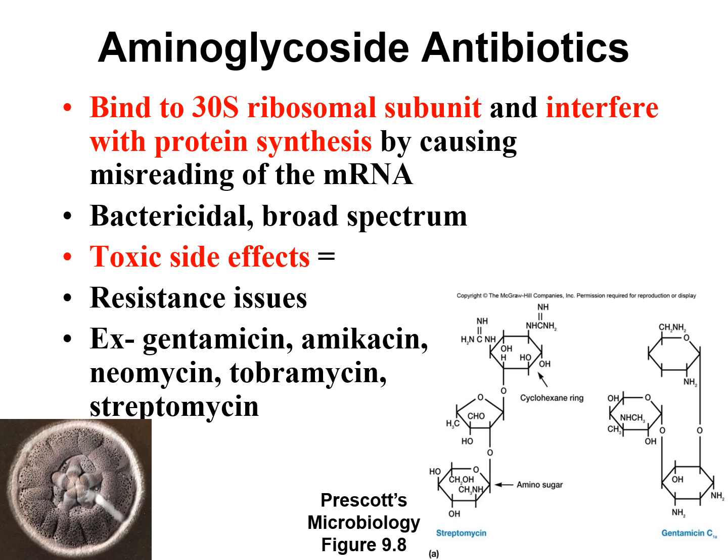The only thing you need to know on these antibiotics is what's in red. I know I wrote where specifically they bind on the ribosome, but you just need to know that they bind to 70S ribosomes and interfere with protein synthesis. I'm not going to ask you that aminoglycoside antibiotics bind to the 30S ribosomal subunit — you don't need to know that. Just know that they bind to 70S ribosomes.